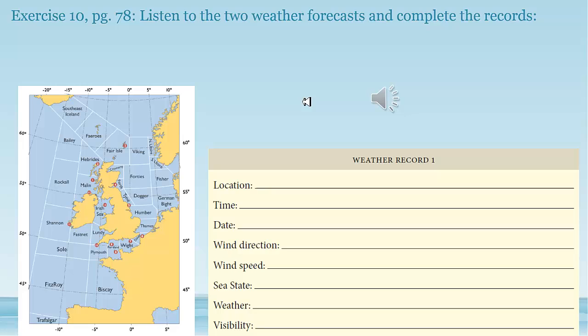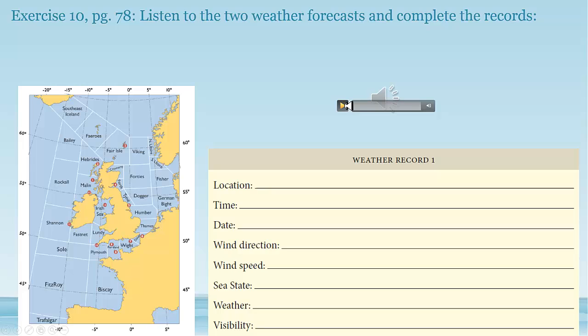Right, now we're going to do some listening, so you need to get a pencil. We're going to listen to two different weather forecasts — the shipping forecasts again. As I said, these are cultural institutions in Britain. We're going to write down what we hear: the location, the time, the date, and then wind direction, wind speed in Beaufort scale, sea state, weather, and visibility. Here are the different sea areas for the Met Office. We're going to listen three times, so go ahead and write down as you hear. Here we go.